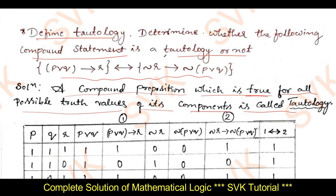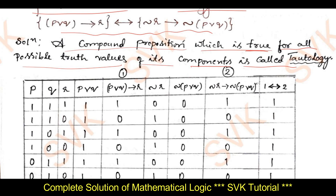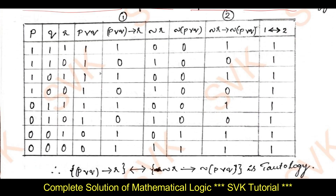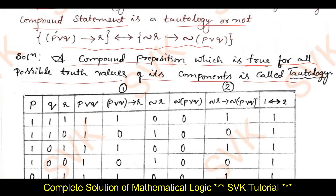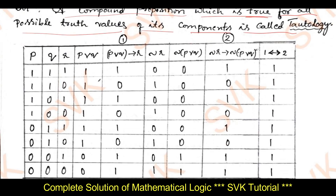Moving on to the next part of the question, they have provided the compound proposition. I need to identify whether the given compound proposition is a tautology or not — meaning the final truth value should be true. As they have given three propositions p, q, and r, we require eight truth values.